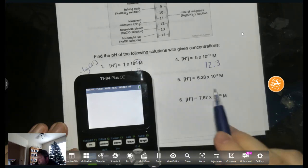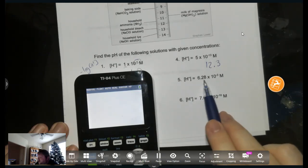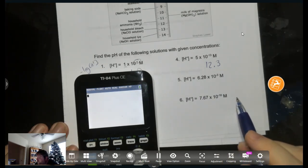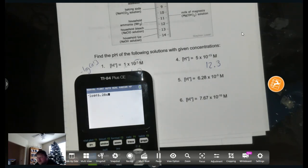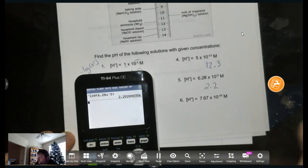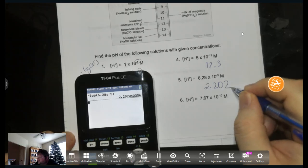Log of 10 to the minus 13 would just be negative 13. But because now the coefficient is greater than 1, our answer is going to be greater than negative 13. So it's going to be between 12 and 13. Watch, and I'll prove it to you. To our calculator, we're going to do negative log of 5e to the minus 13. We're going to get 12.3. All right, moving on to the next one. 6.28, 10 to the minus 3. Again, log of 10 to the minus 3 would just be negative 3. This is larger than 1, so we're going to expect larger than negative 3. So between 3 and 2 on the pH.